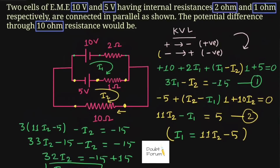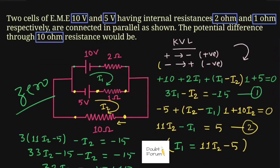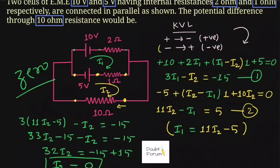When i2 equals 0, it means no current is flowing through the 10 ohm resistor. When there is no current, there is no voltage drop. So the potential difference across the 10 ohm resistor is equal to 0, and that is our answer. Thank you for watching — if you still have any doubt, please let me know in the comment section, and don't forget to subscribe to our channel Doubt Forum. See you in the next video, take care, bye.